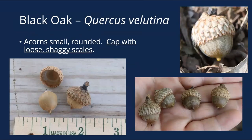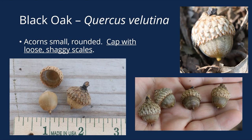The acorns are very different — small and really round, much different than the northern red oak. With black oak, I look for the cap of the acorn: the scales on the cap tend to be a little bit loose and they tend to flake or shag just a little bit. You can see that in these pictures with a little bit of a loose cap. That's really consistent with black oak and one of the characteristics I use to identify it.